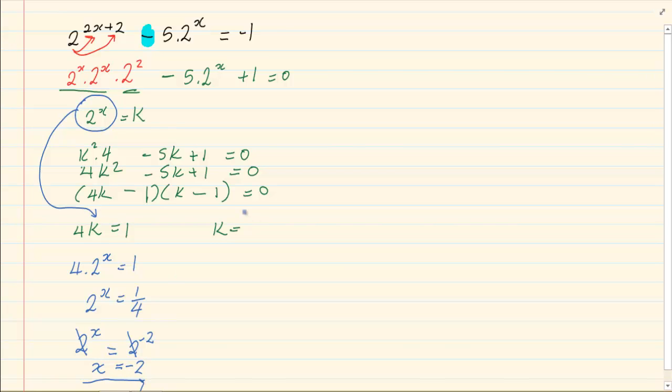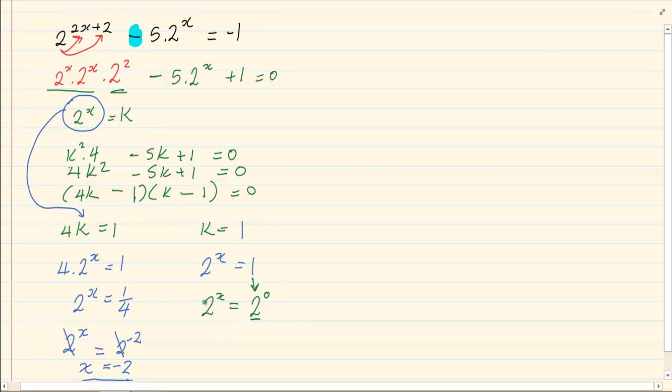The next one is k equals 1. So we have 2^x equals 1. We know that the rule states anything to the power of 0 is equal to 1. Therefore, I will change my 1 to 2^0. Why am I choosing 2? Because that's the base I want. So I got 2^x equals 2^0. Once they have the same base, I can cancel them out. x equals 0.